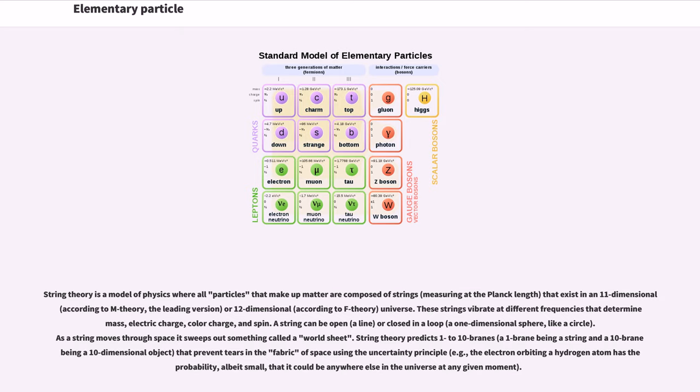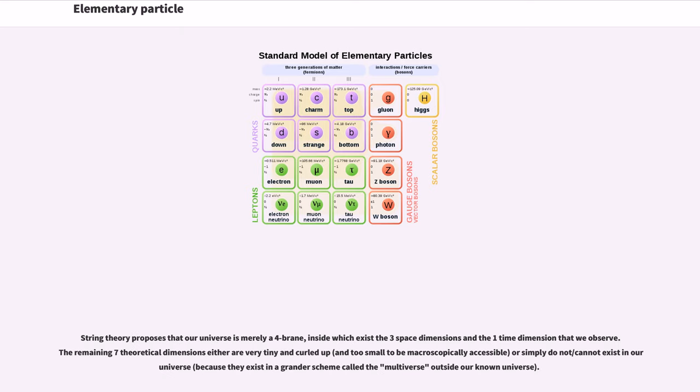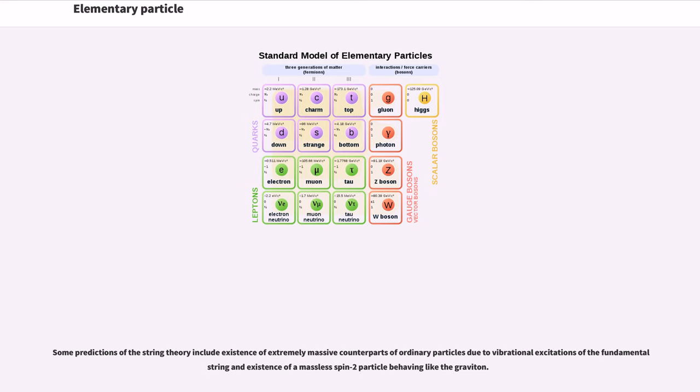String theory proposes that our universe is merely a 4-brane, inside which exist the three space dimensions and the one time dimension that we observe. The remaining seven theoretical dimensions either are very tiny and curled up, and too small to be macroscopically accessible, or simply do not/cannot exist in our universe because they exist in a grander scheme called the multiverse outside our known universe.